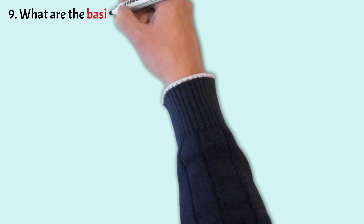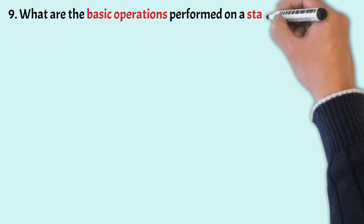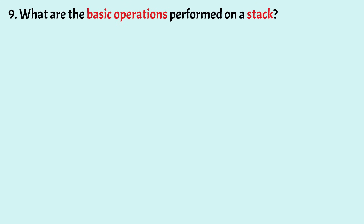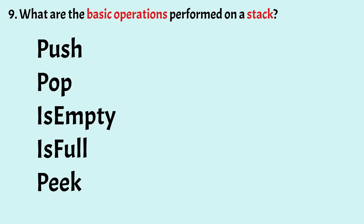What are the basic operations performed on a stack? The basic operations are: push, pop, is empty, is full, and peek. Push adds an element to the top of the stack. Pop removes an element from the top of the stack. Is empty checks if the stack is empty. Is full checks if the stack is full. Peek returns the value of the topmost element of the stack without removing it.